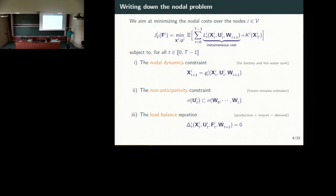The state at time T is related to the state at time T plus one by this relation. We consider also non-anticipativity constraints, which means that at time T I take a decision but I cannot anticipate the future — I can only consider the past realizations of the noise. Eventually I have to consider the load balance equation: at each time T I want that the production equals the demand at all nodes in my graph.